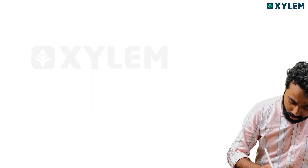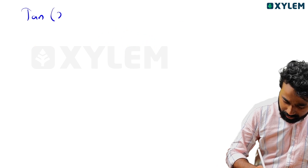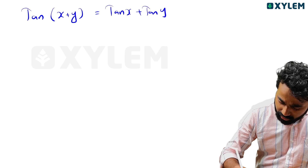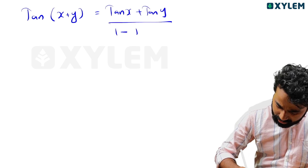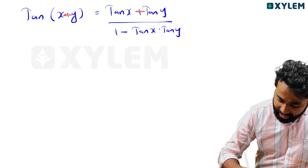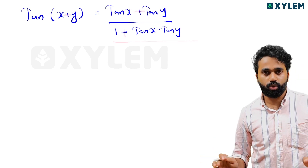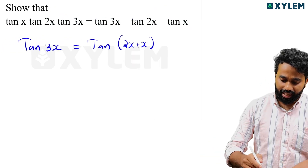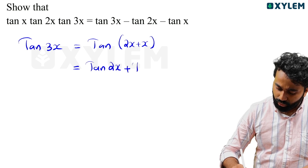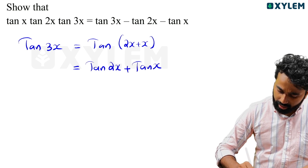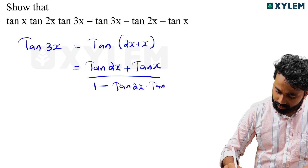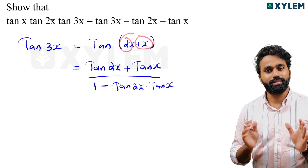tan x plus tan y divided by 1 minus tan x into tan y. Tan x minus tan y divided by 1 plus tan x into tan y. x minus tan x into tan y. x minus tan x into tan y. x minus x is equal to tan x.